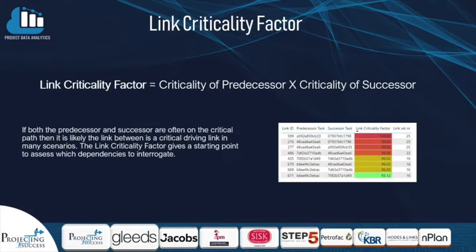We also developed a link criticality factor, which gives a list of links in the schedule that should be targeted as dependencies to be broken. The link criticality factor was defined by the criticality of the predecessor times the criticality of the successor. If the criticality of both the predecessor and the successor were high across many simulations, then it's likely that link was a driving link, and if that link could be broken in the program, there would be a big benefit to the project end date.